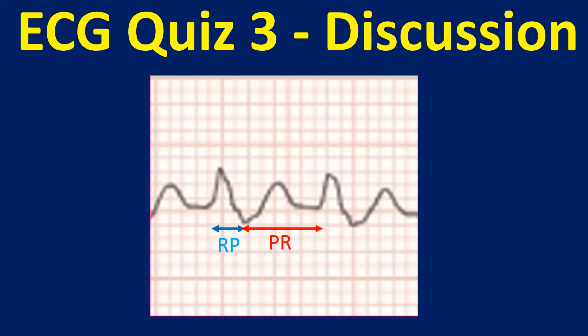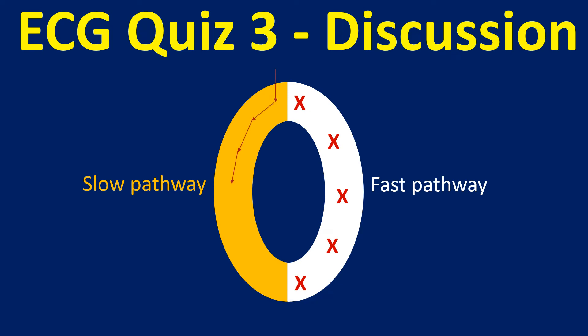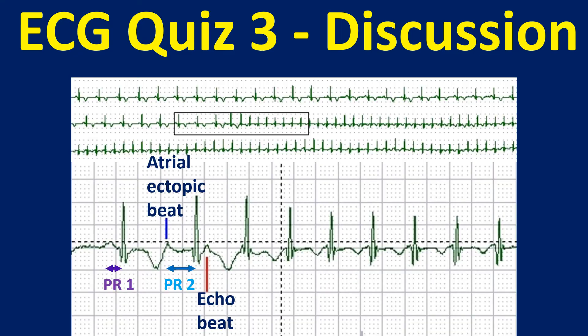There are other causes also for short RP tachycardia. In the slow-fast variety, an atrial ectopic beat is conducted down the slow pathway as it finds the fast pathway refractory after the previous sinus beat. The slow AV nodal pathway recovers fast while the fast pathway recovers next — a feature seen in those with dual AV nodal physiology. The sudden increase in PR interval after an atrial ectopic beat or an atrial extrastimulus during electrophysiology study is known as PR jump.